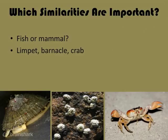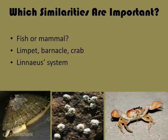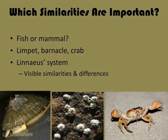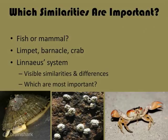What about these three? The one on the left is a limpet, the one in the middle is a barnacle, and the one on the right is a crab. Would you put the limpets and the barnacle together because they have shells that look similar? And where does the crab fit in here? It doesn't look like either one of those two. Linnaeus based his classification system on visible similarities and differences, but his problem was in determining just which characteristics were the most important. Biologists didn't always agree. So as we learn more and more, biologists began to suspect that there was another part to this puzzle.